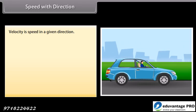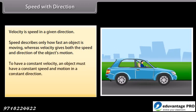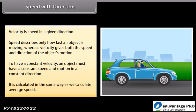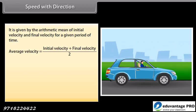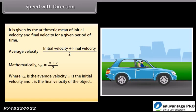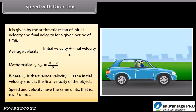Speed with direction. Velocity is speed in a given direction. Speed describes only how fast an object is moving, whereas velocity gives both the speed and direction of the object's motion. To have a constant velocity, an object must have a constant speed and motion in a constant direction. Average velocity is calculated as the arithmetic mean of initial velocity and final velocity: average velocity = (U + V) / 2, where U is initial velocity and V is final velocity. Speed and velocity have the same units: meters per second.